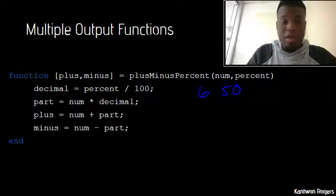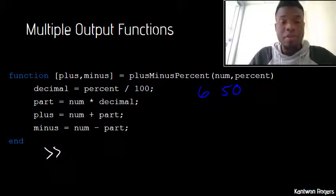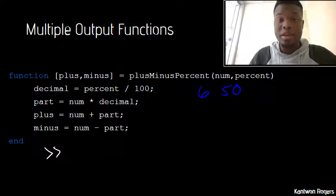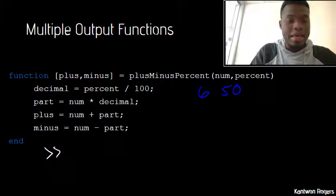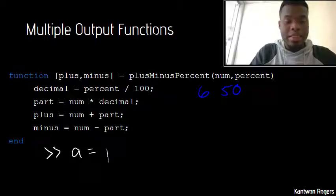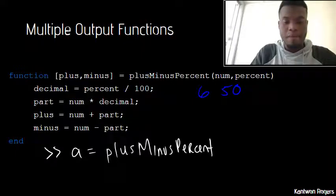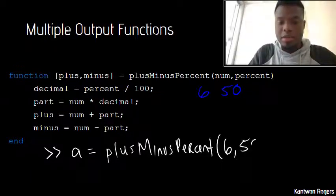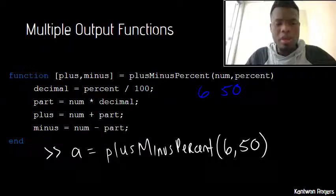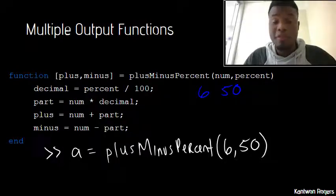So let's talk about how to call this function. So in my command window which I will designate with the arrows again, it's always important to assign your function call back to some certain variable. So let's say I had a variable a and I assign that to plusMinusPercent and I have my inputs here, so my inputs are six and fifty. So right now I'm calling a function as if it only has one output and this is problematic because MATLAB will only return back the first output.